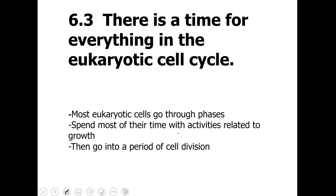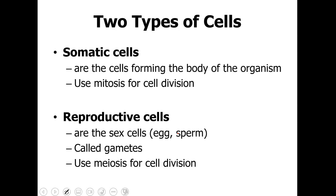There is a time for everything in the eukaryotic cell cycle. Most eukaryotic cells go through specific phases during the cell cycle, spending most of their time with activities related to growth, then going into a period of cell division to create two new daughter cells from a parent cell. There are two types of eukaryotic cells: somatic cells, which form the body of the organism — things like skin cells, organ cells, and blood cells — and these go through mitosis. Reproductive cells, referred to as gametes, are your sex cells — the egg and the sperm — and they use a type of cell division referred to as meiosis.